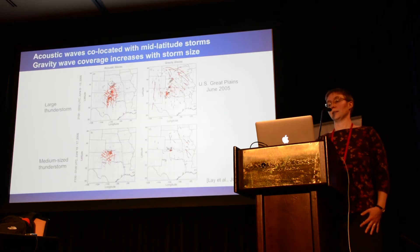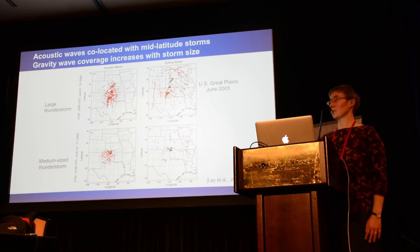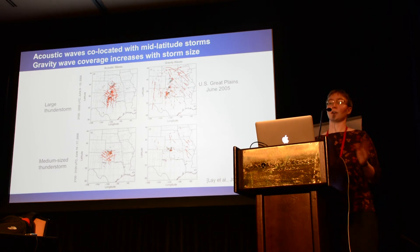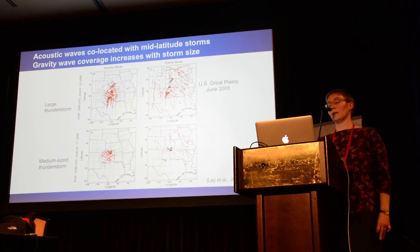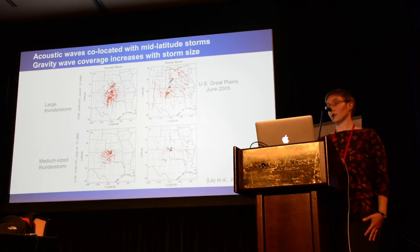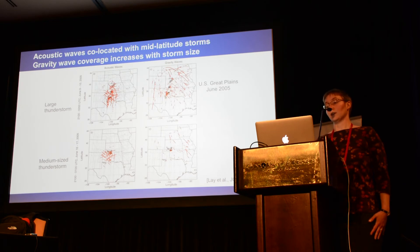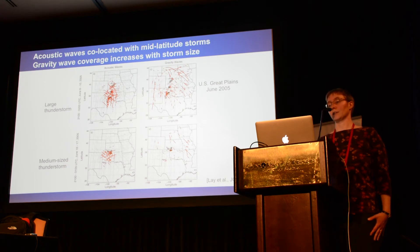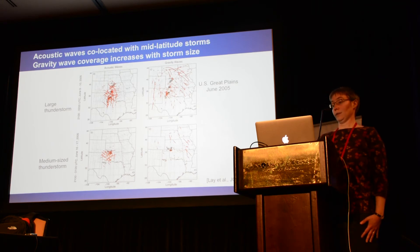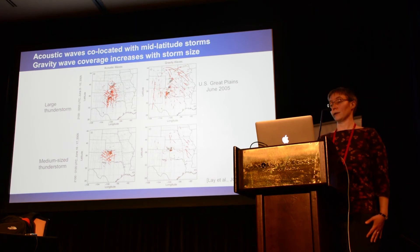Looking at all receivers in the box and all GPS satellites gives arcs across the landscape, shown in light gray — every arc in my area of interest. When a signal surpasses the threshold, it's marked in red. The left side shows acoustic wave signal and the right shows gravity wave signal, with darker contours underneath showing lightning activity. The top two panels show a large thunderstorm — same lightning activity, one showing acoustic wave activity and one gravity wave — and the lower panel shows a medium-sized thunderstorm. You can clearly see more acoustic and gravity wave activity with the larger thunderstorm.